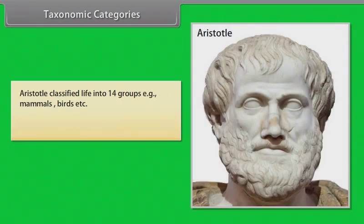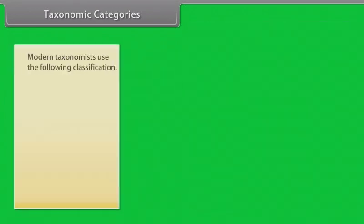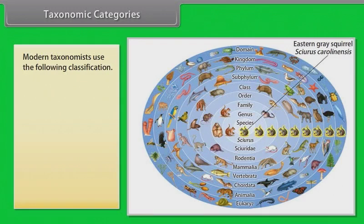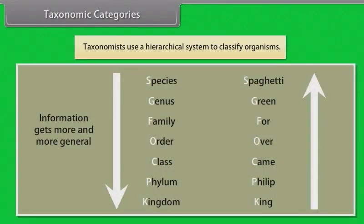Aristotle classified life into 14 groups, for example mammals and birds. Ray grouped animals and plants according to how he thought they were related. Modern taxonomists use the following classification hierarchy: species, genus, family, order, class, phylum, kingdom, and domain. Taxonomists use a hierarchical system to classify organisms.